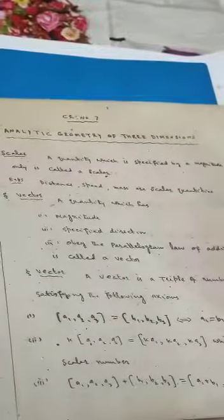First of all we will discuss definitions. The first definition is scalar. A quantity which is specified by a magnitude only is called scalar. Examples of scalar quantities are: distance, speed, mass.